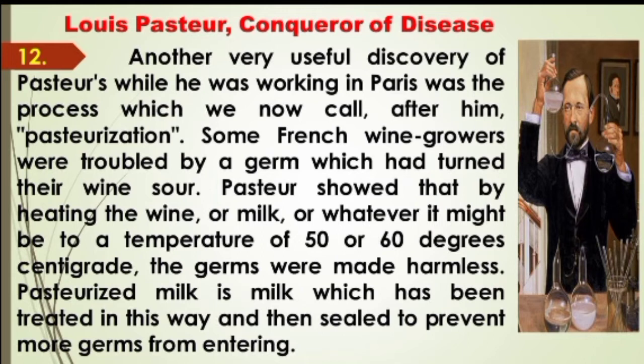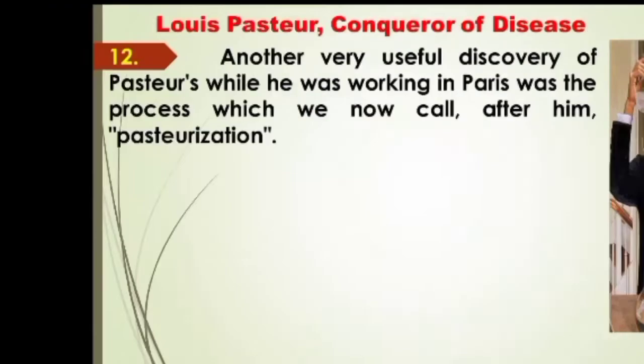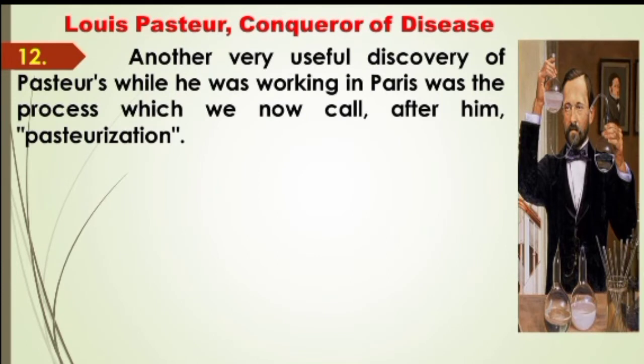This part is explained part-wise. The first sentence is: 'Another very useful discovery of Pasteur's while he was working in Paris was the process which we now call, after him, pasteurization.' Pasteur has been working at Paris, working at a university, and he got an experiment in the process of working — and we call it pasteurization.